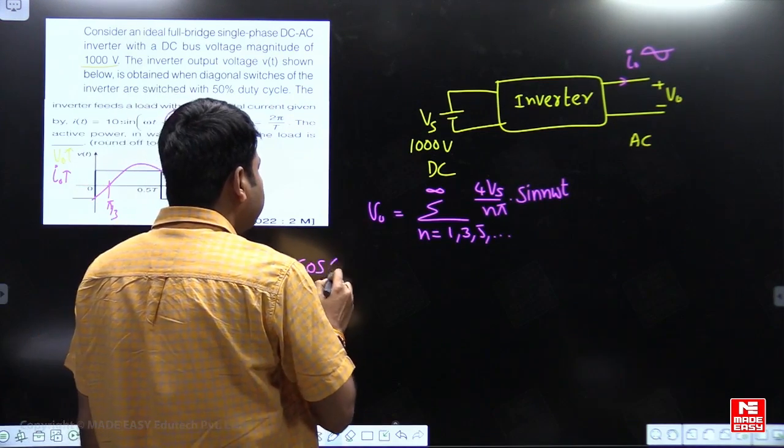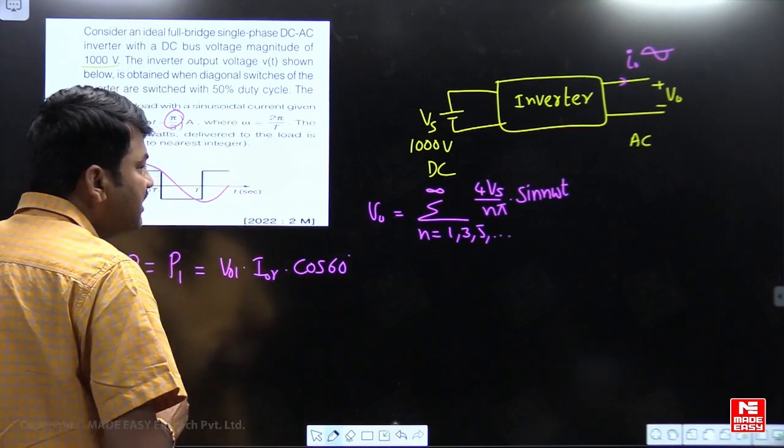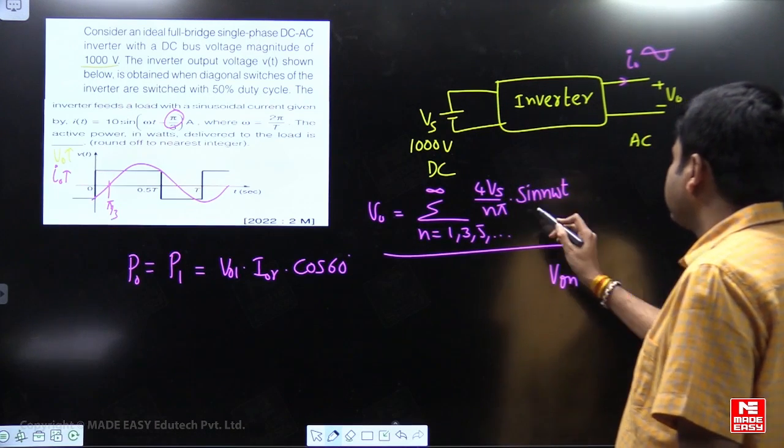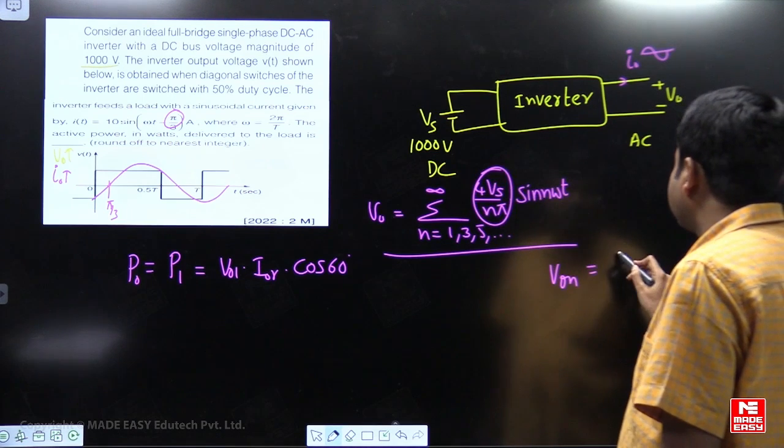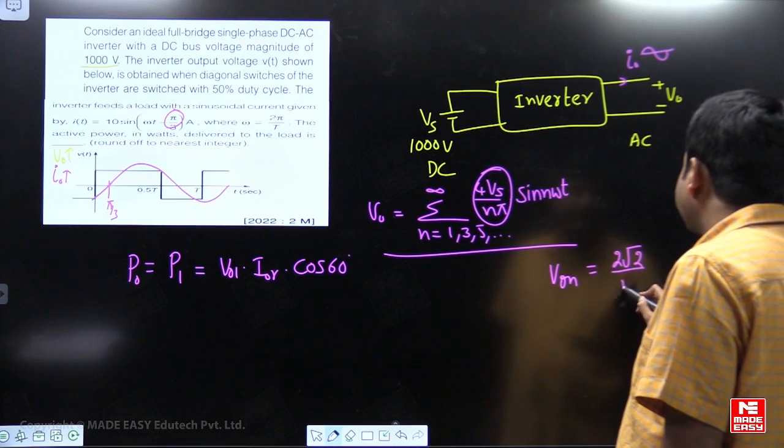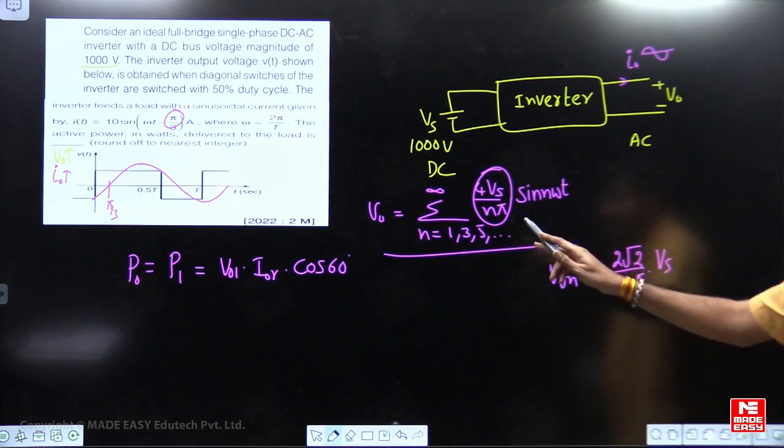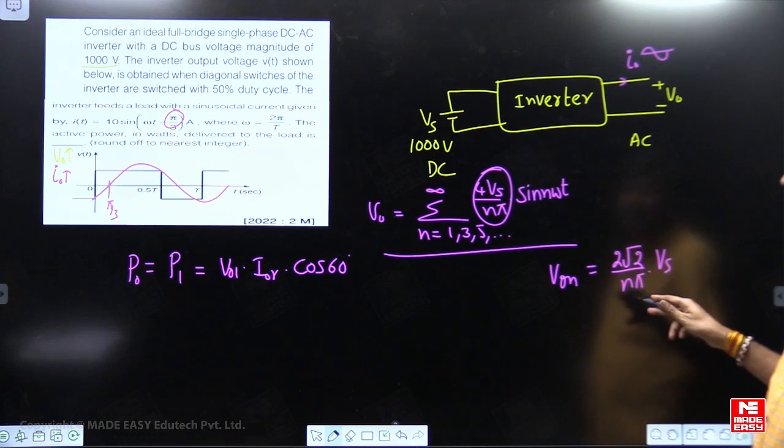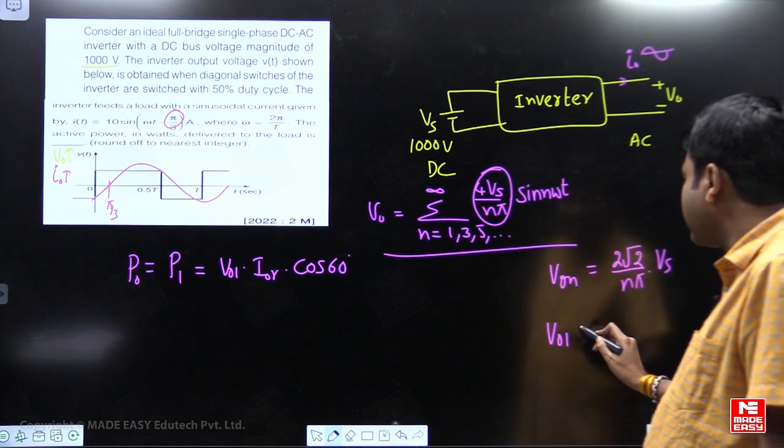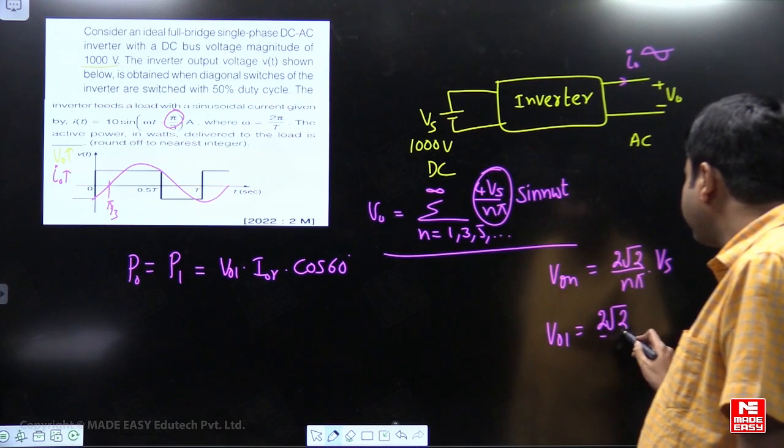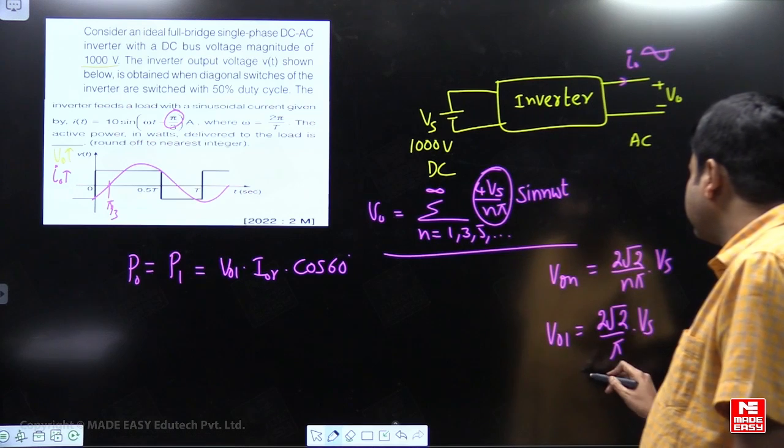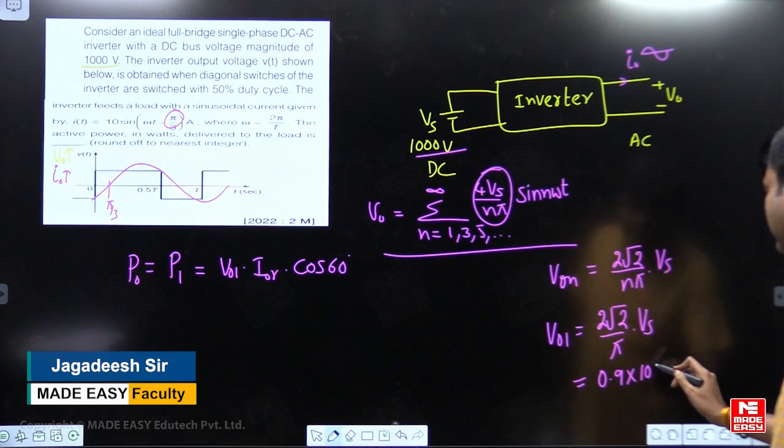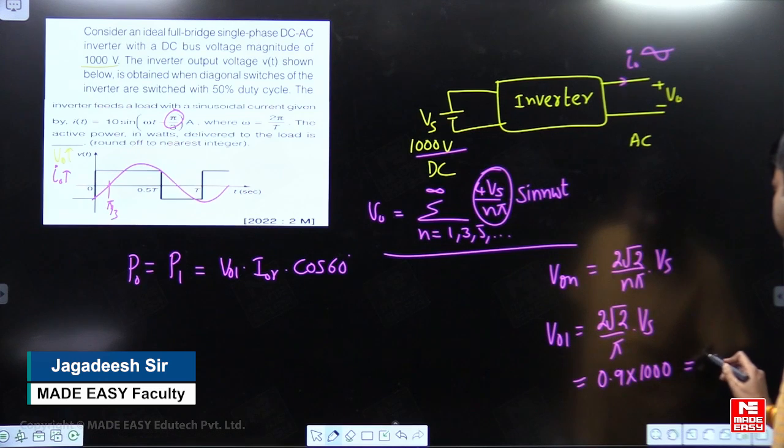See, phase angle difference between pi by 3 means 60 degrees. So fundamental RMS voltage. So fundamental RMS voltage is just go through the Fourier series for square wave, my dear students. Nth harmonic RMS voltage. This is the amplitude. You want RMS means divided by root 2. You will get 2 root 2 by n pi into Vs. This is nth harmonic RMS. You want RMS voltage means divided by root 2, 4 by root 2, 2 root 2 by n pi into Vs. So what is fundamental RMS? Fundamental RMS is 2 root 2 by pi into Vs. So 2 root 2 by pi means 0.9 into the DC supply is 1000 volts here. 1000 volts.